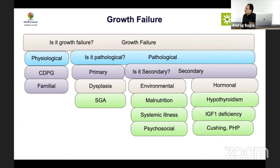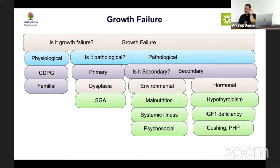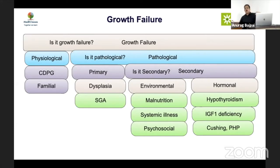Even without many investigations, a growth chart, pubertal assessment, and bone age will give you the diagnosis and classify 80% of cases. For primary causes like dysplasia and SGA, look at faces, body proportions, and birth history. The challenge is differentiating nutritional from endocrine causes — nutritional causes like celiac disease, malabsorption, malnutrition, tuberculosis require different investigations from endocrine causes like Cushing syndrome, hypothyroidism, pseudo-hypoparathyroidism, growth hormone deficiency, and Turner syndrome.